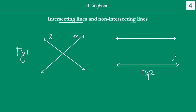We have line L and a line M. We actually represent lines also by lower case letters like this. So in figure 1, line L and line M, they actually criss-cross and they intersect. So this is their point of intersection — they collide at one point.